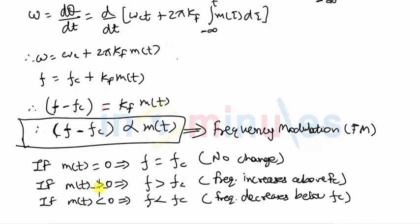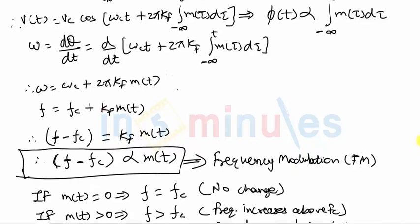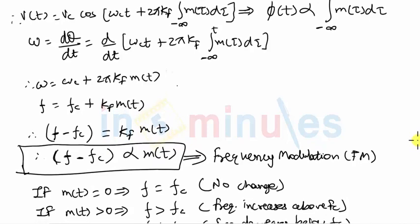So the two conclusions that we make are: number one, in frequency modulation, the frequency varies in proportion to the modulating signal amplitude, and when the frequency is varying, the phase also varies.